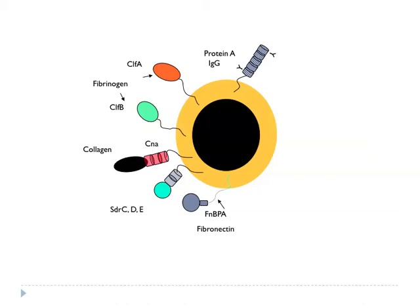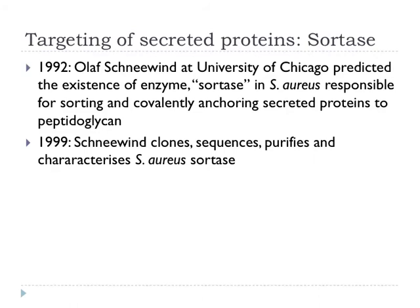This is a cartoon I borrowed from Tim Foster — if you had gone to his talk you'd recognize it, because I took this slide from him about ten years ago. It shows Staph aureus with its various surface proteins. They bind various ligands — things like fibrinogen, collagen, fibronectin and so forth. They're all flapping around out in the solvent, making connection to the outside world. They're all tethered into the cell wall and actually tethered to the peptidoglycan. He called this enzyme sortase, which would sort these proteins onto the bacterial cell surface and anchor them to the peptidoglycan.